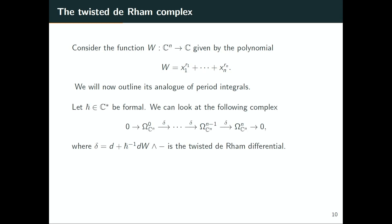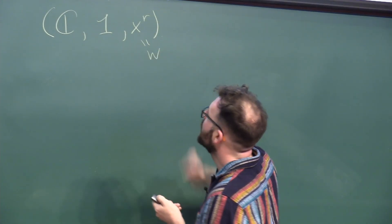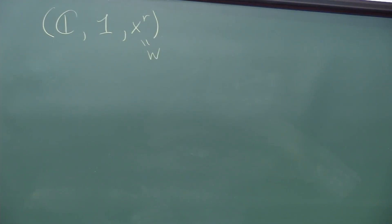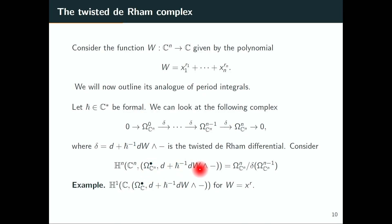I'm going to add a formal variable h-bar. Then I'm going to look at the following twisted de Rham complex: I have the de Rham differential and then I'm going to add a twisting by dW — here it's going to be my W. Then I look at the hypercohomology of this complex. I'm fortunate in this example because all of the cotangent bundles here are globally generated, so I can really just do this on differential forms.